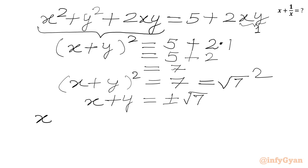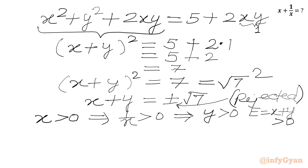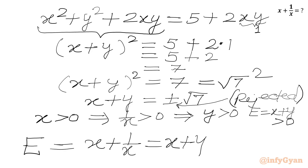Taking the square root of both sides: x + y = ±√7. In our problem, x is given as positive, which means 1/x is also positive, so y is positive. Therefore our expression E = x + y must be positive. We reject the negative sign. Our final answer is E = x + 1/x = x + y = √7.